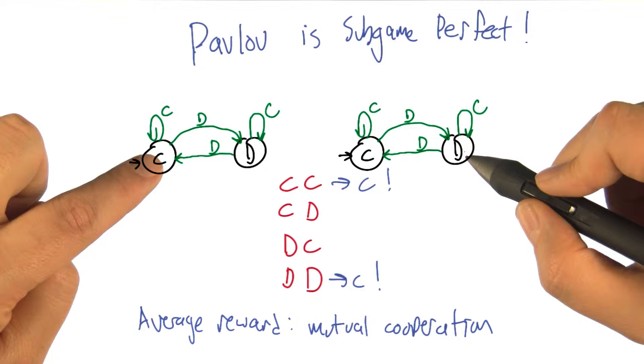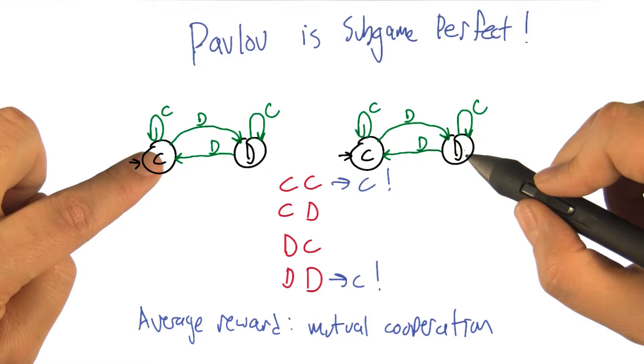So if I cooperate and you defect, let's see, the guy who cooperates moves to defect, and the guy who defects moves to defect. So now you agree, and so you're going to cooperate. Boom.